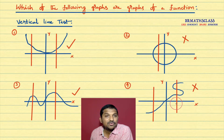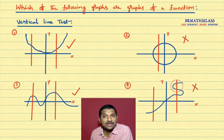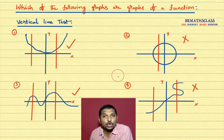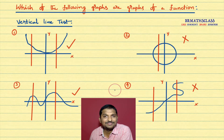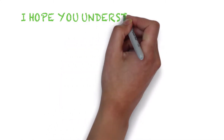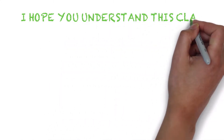So we learned the vertical line test to check whether a given graph is a graph of a function or not. In the next class, we will learn domain, codomain, image, and preimage of a function. I hope you understood this class.